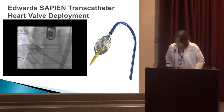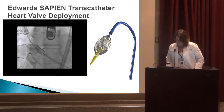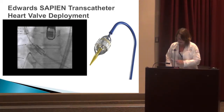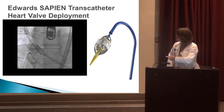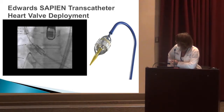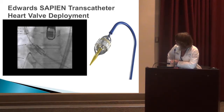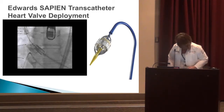Here is an Edwards Sapien transcatheter procedure under fluoroscopy. You can see the TEE probe, and this patient had prior bypass. The catheter comes up from the groin, around the aorta, and through the aortic valve. This is the Edwards Sapien valve being positioned at the valve.